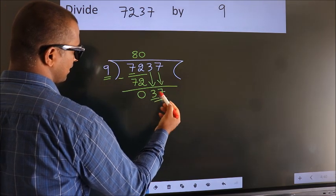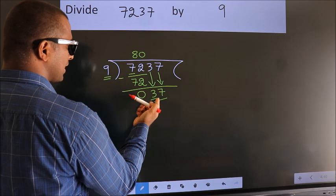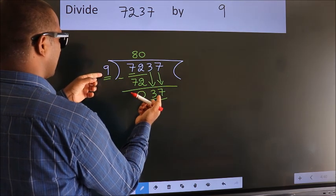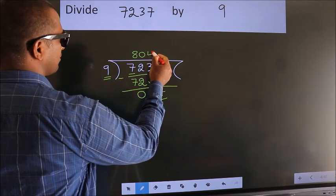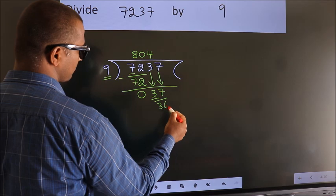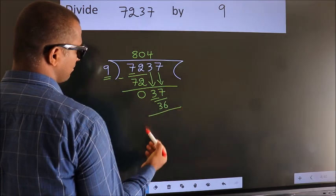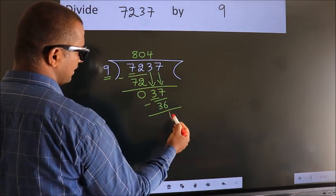So, 37. A number close to 37 in 9 table is 9 fours, 36. Now, we subtract. We get 1.